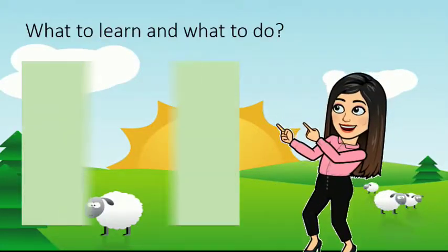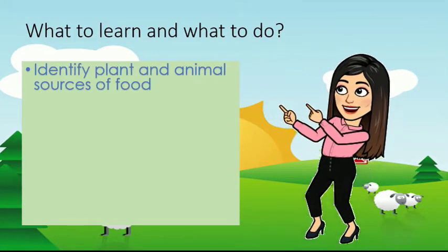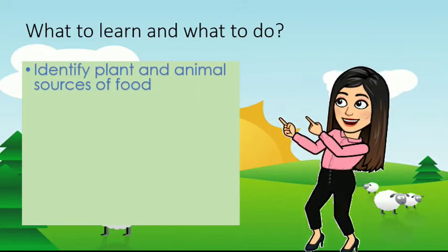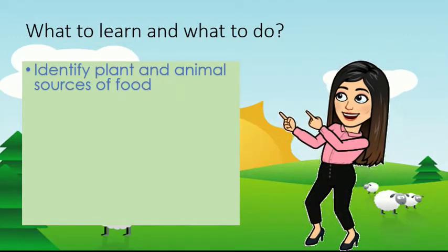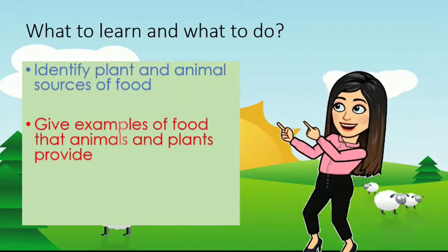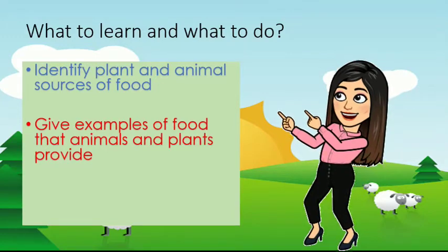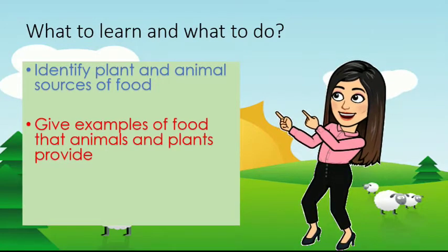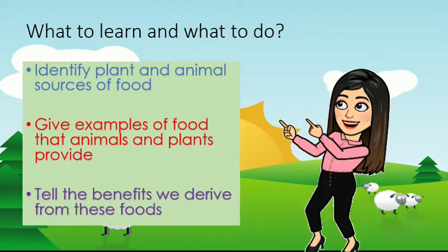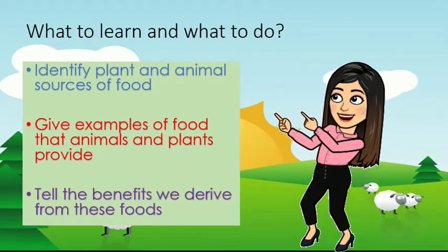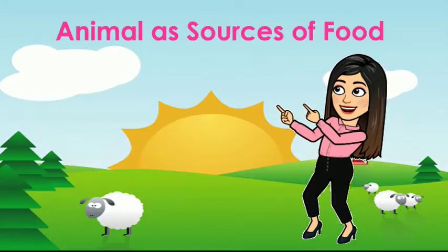What we are going to learn and to do are: identify plant and animal sources of food, give examples of food that animals and plants provide, and tell the benefits we derive from these foods.